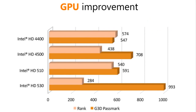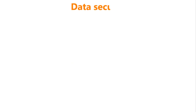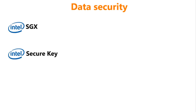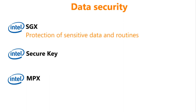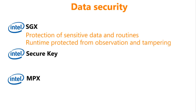We will now review some advancements for a subject that should be at the forefront of any decision: data security. Three features that have been added to enhance and assist are the following: Intel SGX, Intel Secure Key and Intel MPX. Intel SGX, or Intel Software Guard Extensions, provides applications the ability to enforce trusted execution protection for their sensitive routines and data. Run-time execution is protected from observation or tampering by any other software, including privileged software within the system.